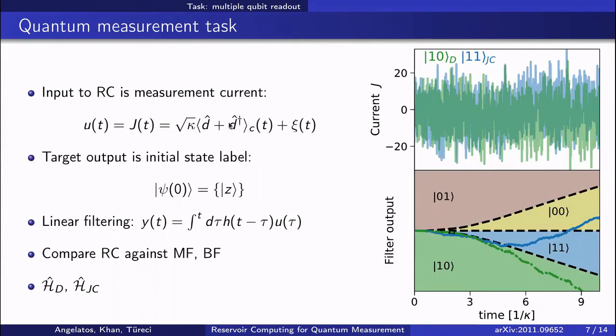The input to the reservoir computer is going to be these cavity measurement currents, which are dominated by noise, as you can see in this plot on the right, where we can't distinguish these two traces by eye.